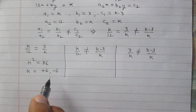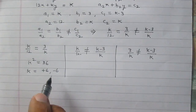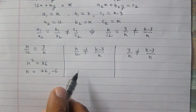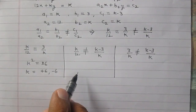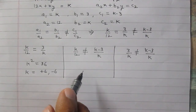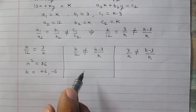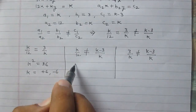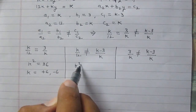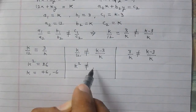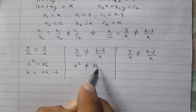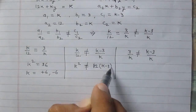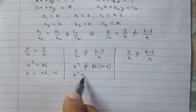So all possible values of k from situation 1 are -6 and +6. In the second situation we have an inequality: k/12 ≠ (k - 3)/k. Let us solve this inequality.